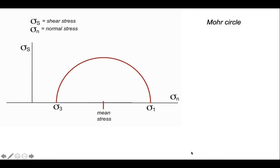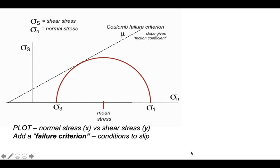The Mohr circle provides a relationship, for a given sigma 1 and sigma 3 pair, between shear stress and normal stress for a variety of fault orientations or potential fault orientations. But do they slip? In order to answer that we need a failure criterion — a criterion which says under which conditions faults will slip. What's plotted on the graph now is the so-called Coulomb failure criterion, which relates to frictional sliding on a fault surface. Fault orientations below that surface are stable; beyond it they are unstable; and they're critical for slipping if they lie on the failure line.